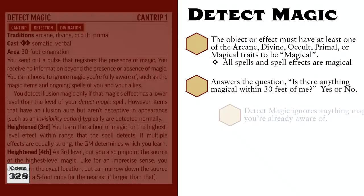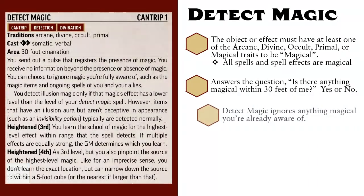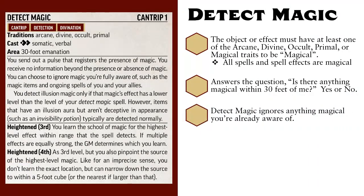When you cast it, you can choose to ignore anything you already know that is magical — for example, any gear that you or your friends are carrying. As long as you know it's there and it's magical, then you can choose to ignore those from the results when casting Detect Magic.